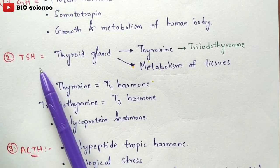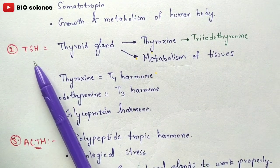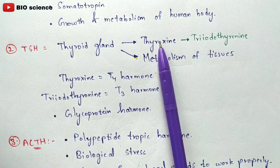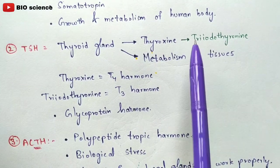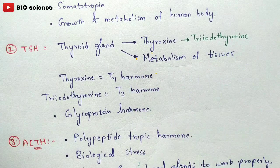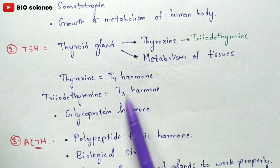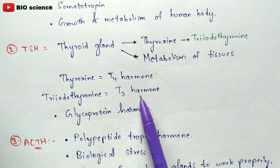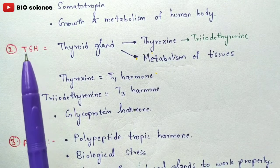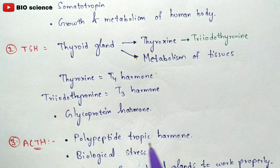The second hormone is thyroid stimulating hormone (TSH). It stimulates the thyroid gland to secrete thyroxine (T4), which in turn regulates triiodothyronine (T3). TSH is mainly responsible for the metabolism of the tissues, and it is classified as a glycoprotein hormone.